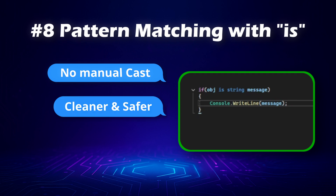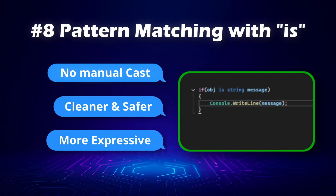It's also cleaner and safer — the variable is strongly typed inside the block, so there's no chance of an invalid cast. And it's more expressive; it almost reads like natural language: `if object is string message`. So whenever you need to check a type, don't write extra casts — use pattern matching with `is`. It makes your code shorter, safer, and easier to read.